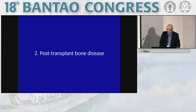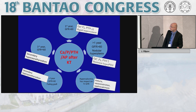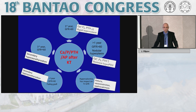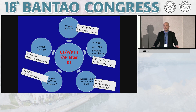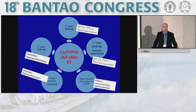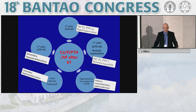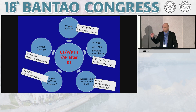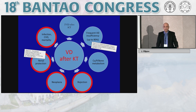Calcium and phosphate changes are generally rapidly normalized within the first 12 months. However, a certain percentage of patients may have elevated PTH, elevated calcium, and lower phosphate levels due to persistent hyperparathyroidism associated with lower GFR levels. Ways to correct these abnormalities will be addressed in subsequent slides.